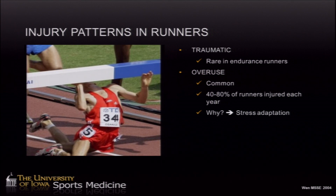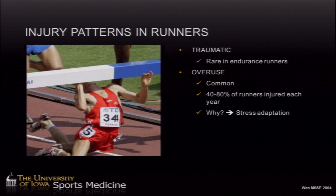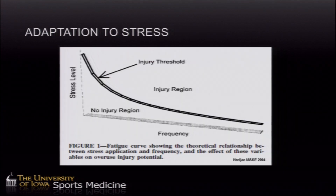When we talk about injury patterns in runners, by and large we're talking about overuse injuries. Certainly we can see traumatic injuries — for instance, if you try to run through a steeplechase barrier instead of over it — but usually those are pretty rare when we're talking about distance runners. Overuse injuries are actually very common, and up to 80 percent of runners may experience an overuse injury each year, which is really an astronomically high rate. The same things that make us better runners also make us injured runners, and there's a delicate balance between the stress we put on our body and that leading to adaptation versus injury.